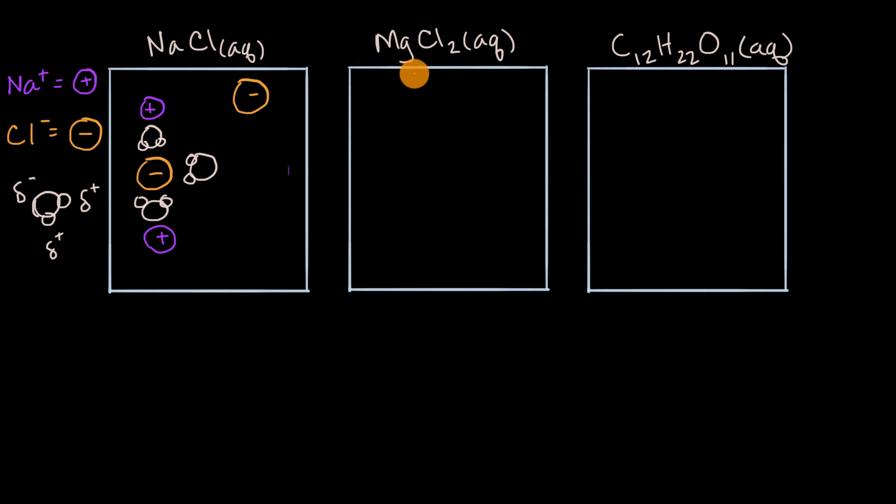Now for these next two, let's just focus on the solutes. What would the solute look like in the solution? Well, magnesium chloride, this once again is an ionic compound. And so it is going to dissociate into its constituent ions. For every one magnesium ion, actually going to have a plus two charge, you're going to have two negatively charged chloride anions. And what's the relative sizing?